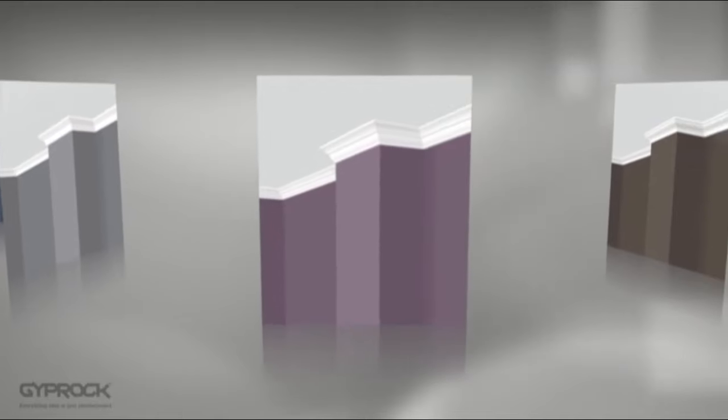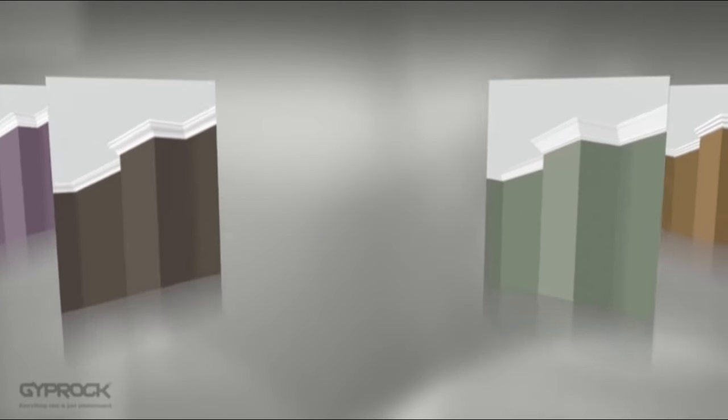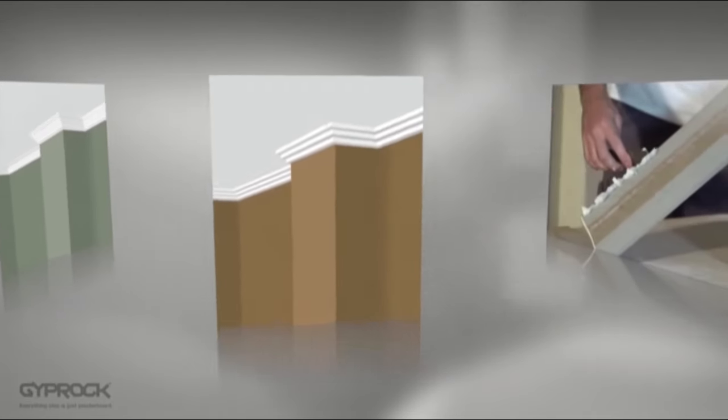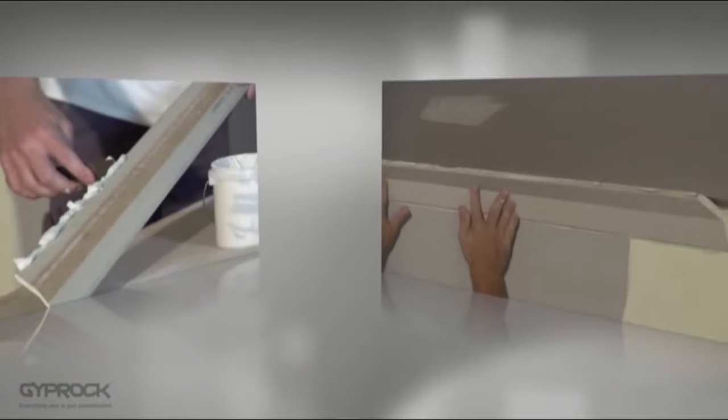Cornice is used to cover the junction between the ceilings and walls and to add a decorative element to your room. It's adhered to the wall and ceiling using Gyproc cornice cement and held in place with temporary nails while the compound sets.